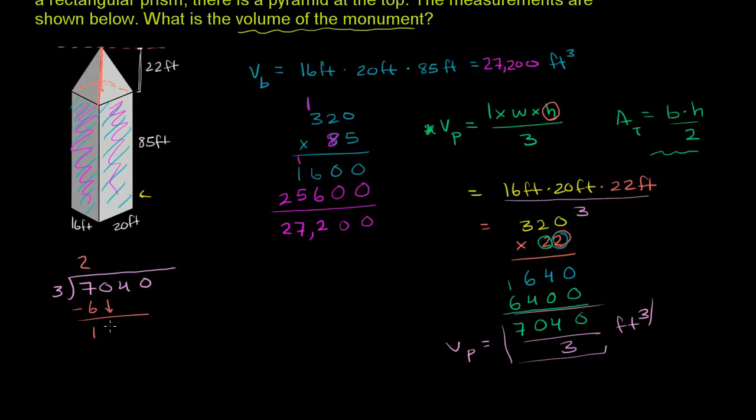Bring down the 0. 3 goes into 10 three times. 3 times 3 is 9. Subtract. You get 1. Bring down the 4. 3 goes into 14 four times. 4 times 3 is 12.